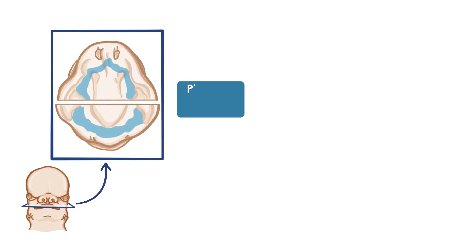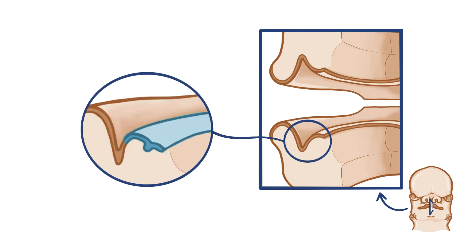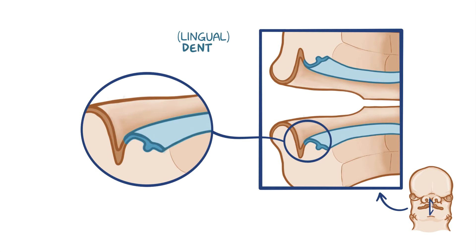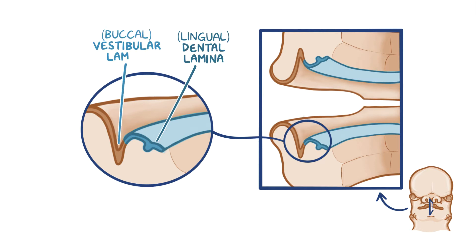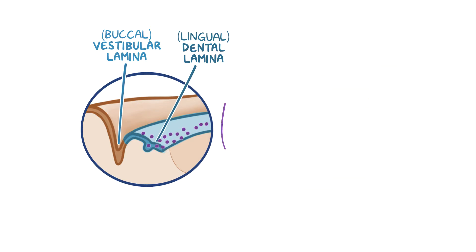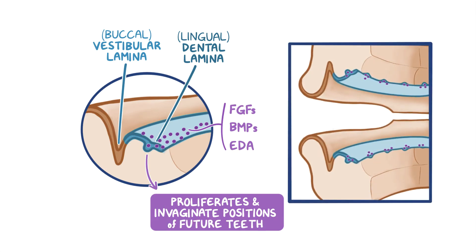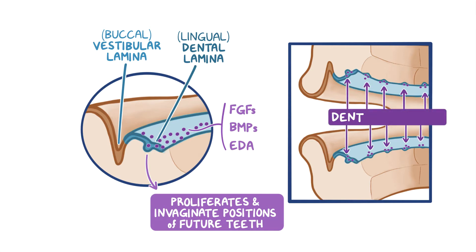Tooth development starts with the thickening of the primitive oral epithelium known as the primary epithelial bands, one on each jaw. Each primary epithelial band soon splits into two: an inner or lingual dental lamina and an outer or buccal vestibular lamina. The vestibular lamina subsequently hollows and forms the vestibule of the mouth, which is the space between the alveolar portion of the jaws, lips and cheeks. Signal proteins such as FGFs, BMPs and ectodisplasin cause the cells within the dental lamina to start proliferating and to invaginate in positions corresponding to the locations of future teeth. These localized, enlarged projections within the dental lamina are known as the dental placodes.